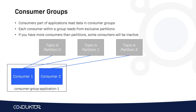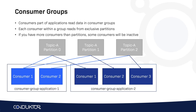If you have a second consumer group called consumer group application two with three consumers, then we have as many consumers as partitions, and so each consumer is going to be reading from one distinct partition.